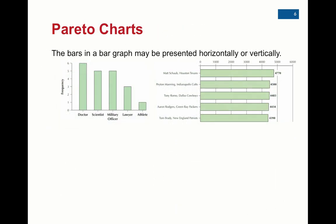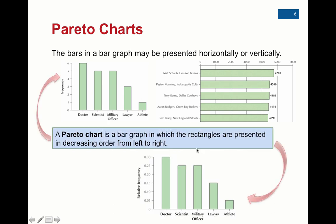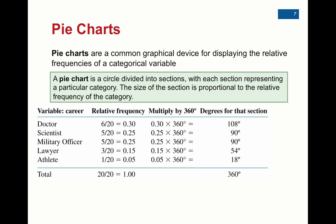A Pareto chart is just a bar graph, but we put the data in order from smallest to largest. The bar graph they were doing before was actually a Pareto chart. Pareto charts aren't really necessary, but sometimes we might want to organize it in order.